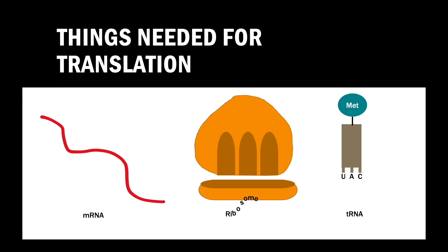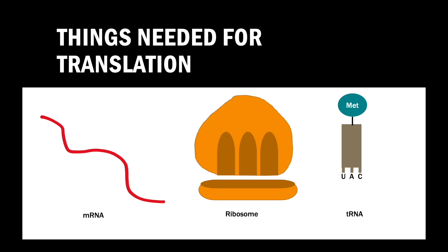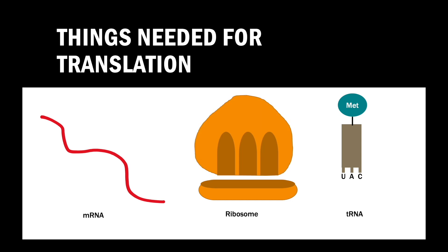The ribosome consists of a large subunit and a small subunit. The large subunit consists of three sites: the E site, the P site, and the A site. The small ribosomal subunit contains the site called the mRNA binding site.